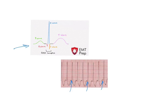We know where the P wave should be, but we can't see it. You'll also notice that these T waves are upside down — that's an important finding on the monitor. Those upside down T waves are covering up the space where the P wave should be.